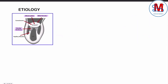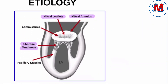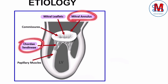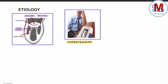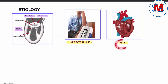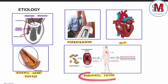If we talk about the etiology of mitral regurgitation, it is due to abnormalities of mitral leaflets, annulus, and chordae tendineae. If we talk about common causes, then we can talk about hypertension, congestive heart failure, ischemic heart disease, and rheumatic fever.